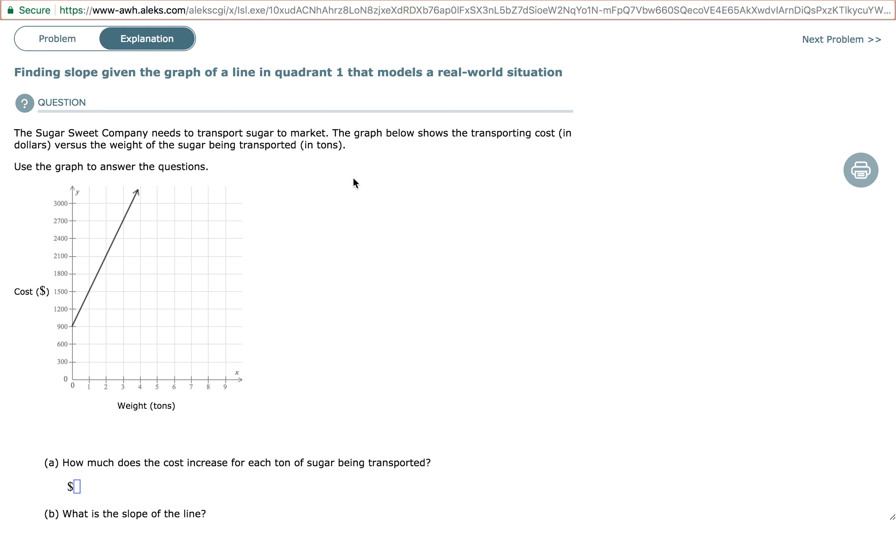So when you're asked to find the slope, what you're really being asked to find here is the cost in dollars per ton. So how many dollars are you paying per ton? That's what you really want to know, the unit rate.